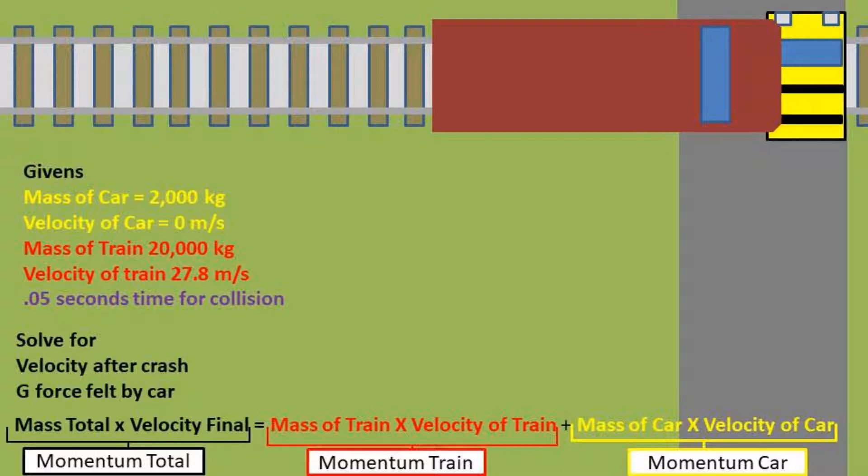So the formula we'll be using is mass total times the velocity final equals the mass of the train times the velocity of the train plus the mass of the car times the velocity of the car. This is a simple equation that shows that momentum is conserved. The initial momentum of the train is transferred into the momentum of the train and car combined.